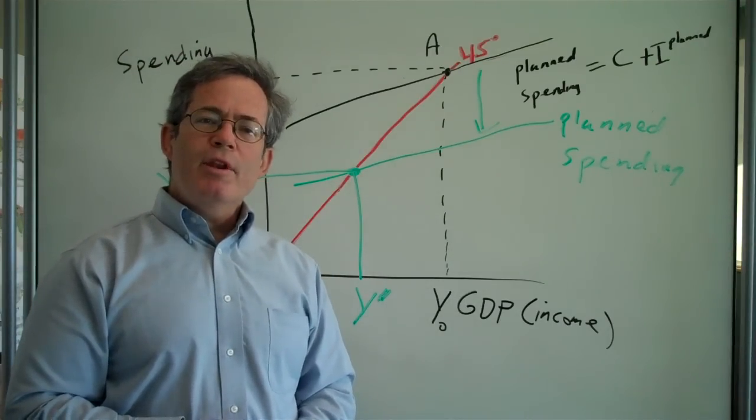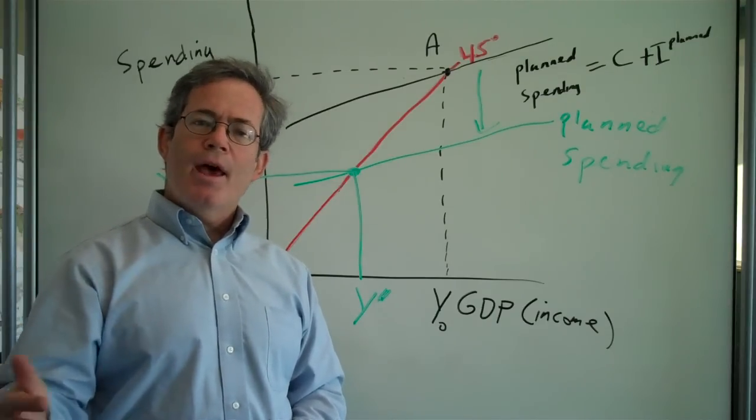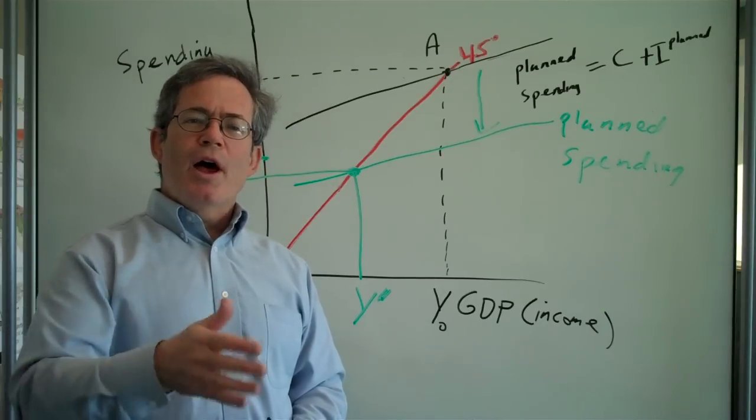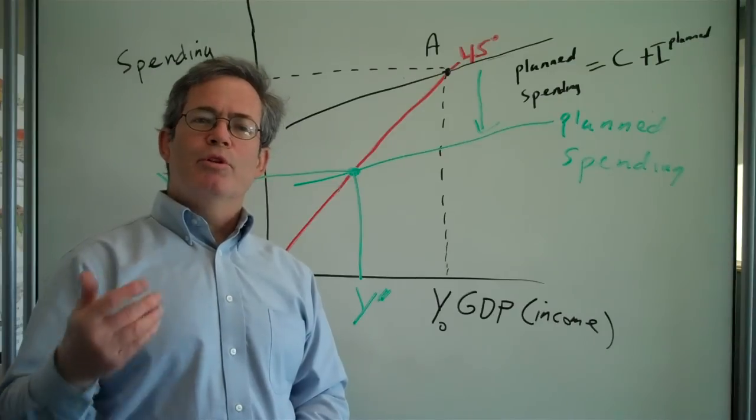And so the income expenditure model describes how changes in aggregate demand, or desired spending in the economy, through the multiplier process, change the amount the economy actually produces.